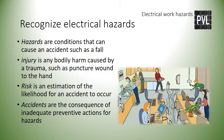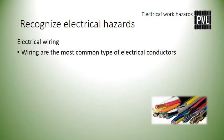Hazards are the conditions that allow for accidents to occur — accidents can cause injury or death. Electrical hazards are those hazards specific to electrical work. Wiring are the most common type of electrical conductors. They are installed to carry electrical charge and electrical flow. Wires range from very thin, as for a small electronic, to the very large, as the ones used for transmission lines.